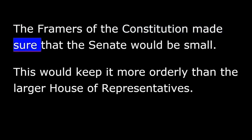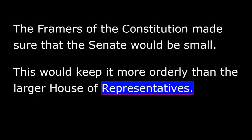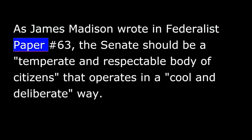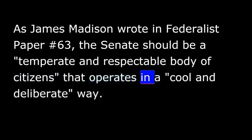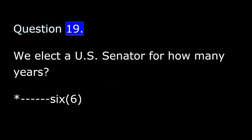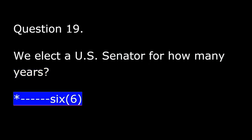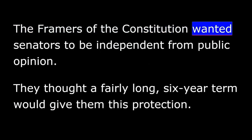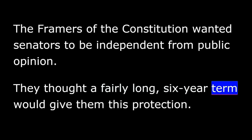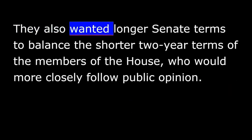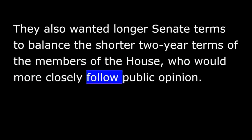The framers of the Constitution made sure that the Senate would be small. This would keep it more orderly than the larger House of Representatives. As James Madison wrote in the Federalist Paper number 63, the Senate should be a temperate and respectable body of citizens that operates in a cool and deliberate way. The framers of the Constitution wanted Senators to be independent from public opinion. They thought a fairly long six-year term would give them this protection. They also wanted longer Senate terms to balance the shorter two-year terms of the members of the House, who would more closely follow public opinion.